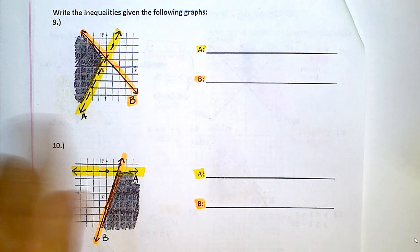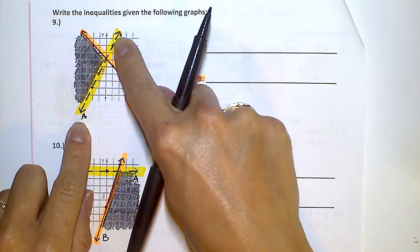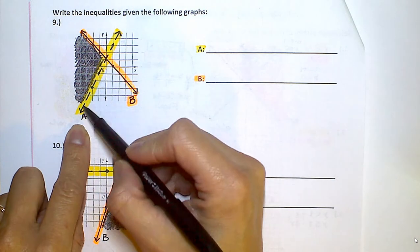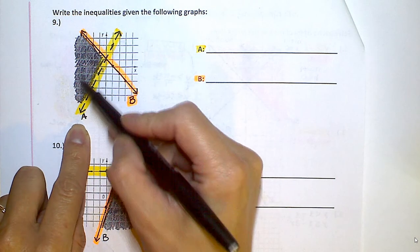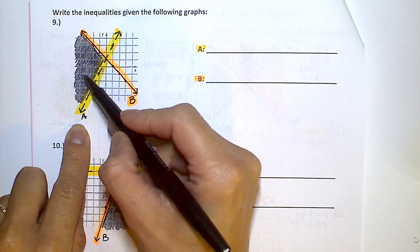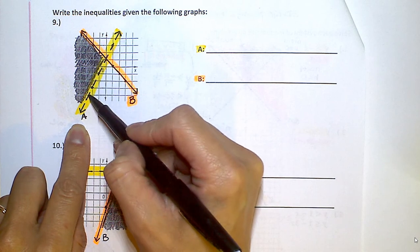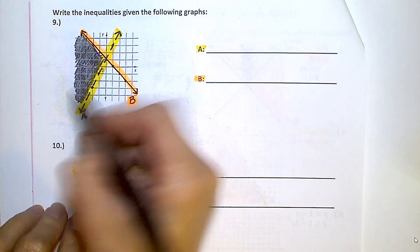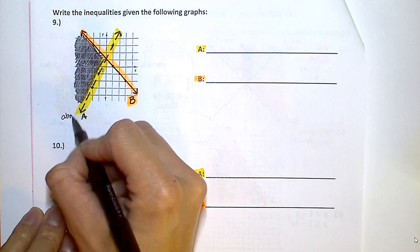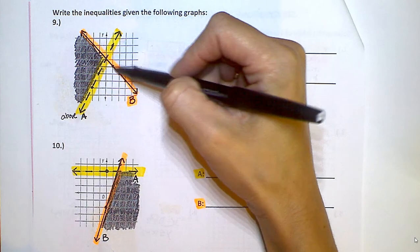Now we're going to be looking at A and we notice that where we're shading, the black part is the solution set. So that is in relation to A above A. So we shaded above A but then I notice that it is below B.